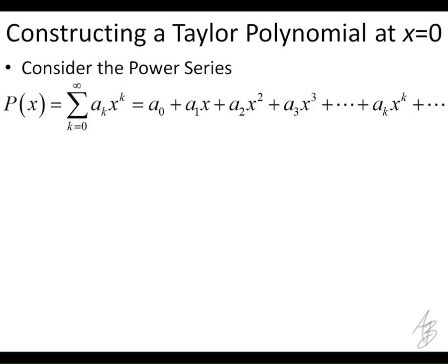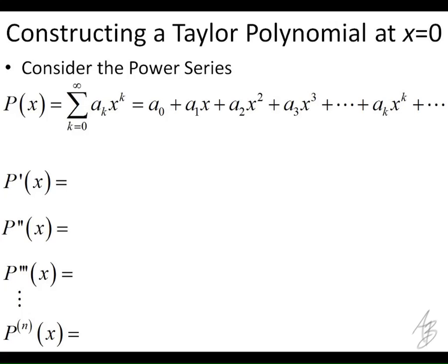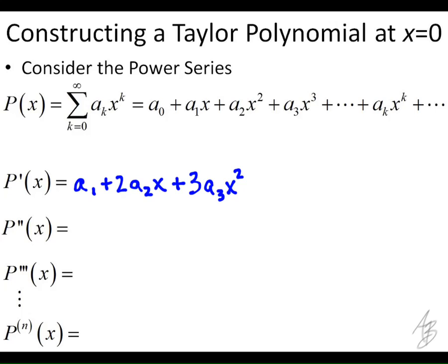Let's take a look at how we're going to do this. If we look at this general power series given by this formula, we have the constant term, then the linear term, then the quadratic term, and so on. We're going to take the derivative of this polynomial over and over again. Taking the derivative term by term: the constant term drops out, the derivative of the linear term is just a₁ using the power rule, and the derivative of the next term is 2a₂x.